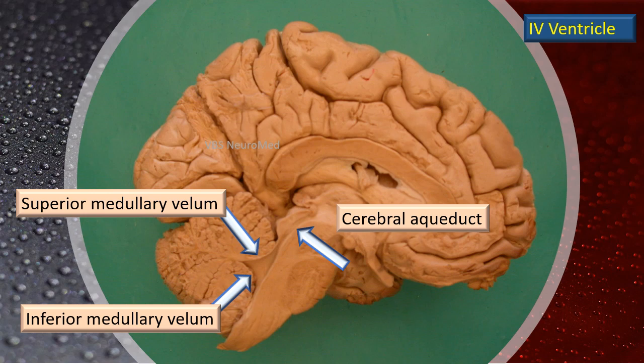There is a roof-like tent for this ventricle — the fourth ventricle. It has two components: a superior medullary velum and an inferior medullary velum. These are shown in this photograph.